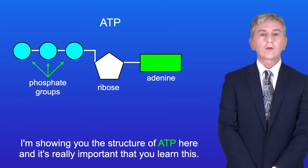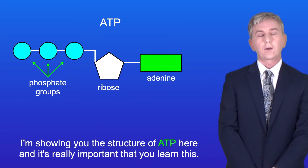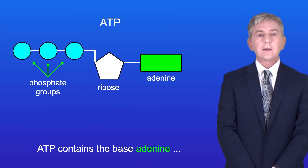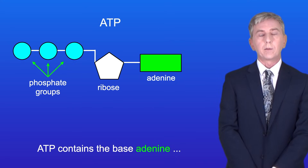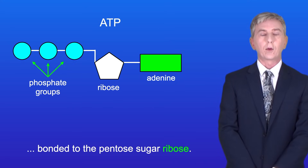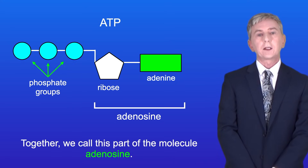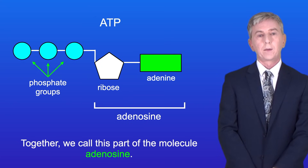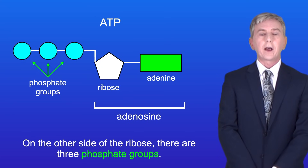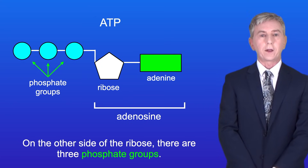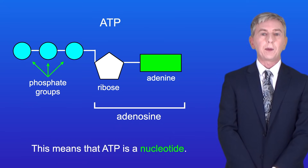I'm showing you the structure of ATP here, and it's really important that you learn this. ATP contains the base adenine bonded to the pentose sugar ribose. Together we call this part of the molecule adenosine. On the other side of the ribose there are three phosphate groups, so this means that ATP is a nucleotide.